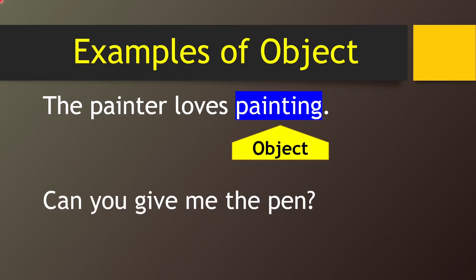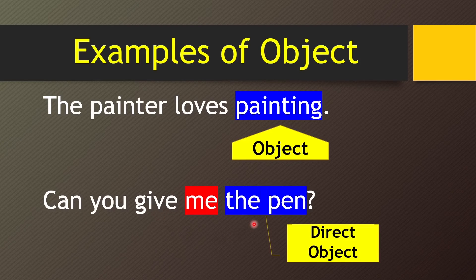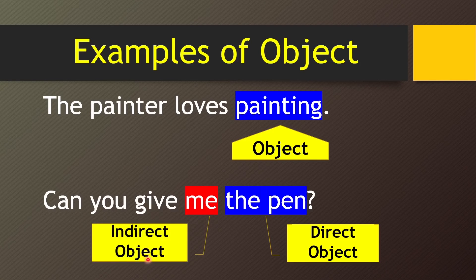Can you give me the pen? Here we have to focus on two objects in this sentence: me and the pen. Give is the verb, and the pen is receiving the action directly, so the pen is the direct object. And me — give me — who is getting the pen? Me. So this is called the indirect object. In the same sentence you can find both a direct object and an indirect object.